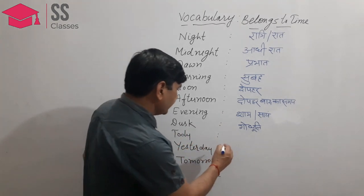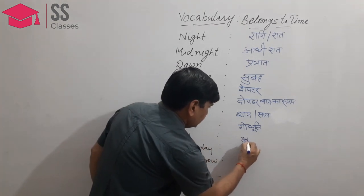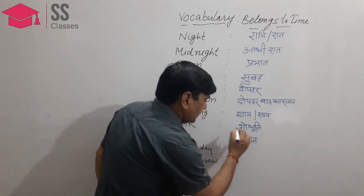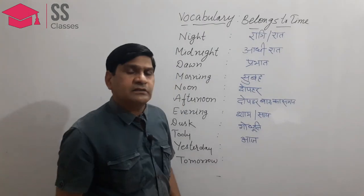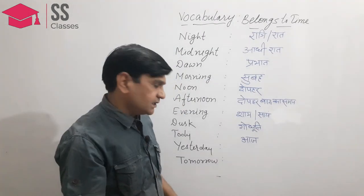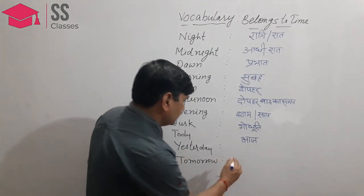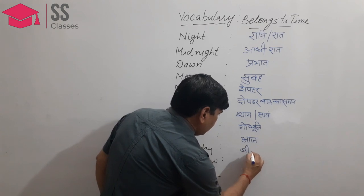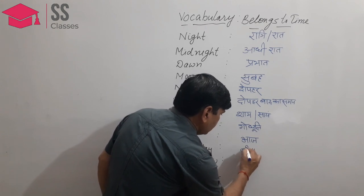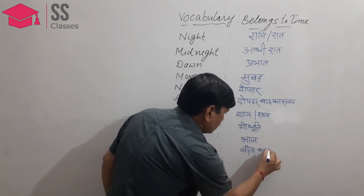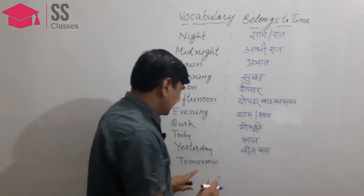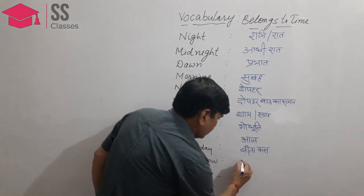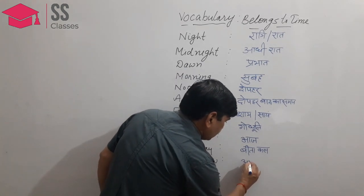Today — aaj ka samay, jo aaj hai, today. Yesterday — bita hua kal. And our last one is tomorrow — aane wala kal.